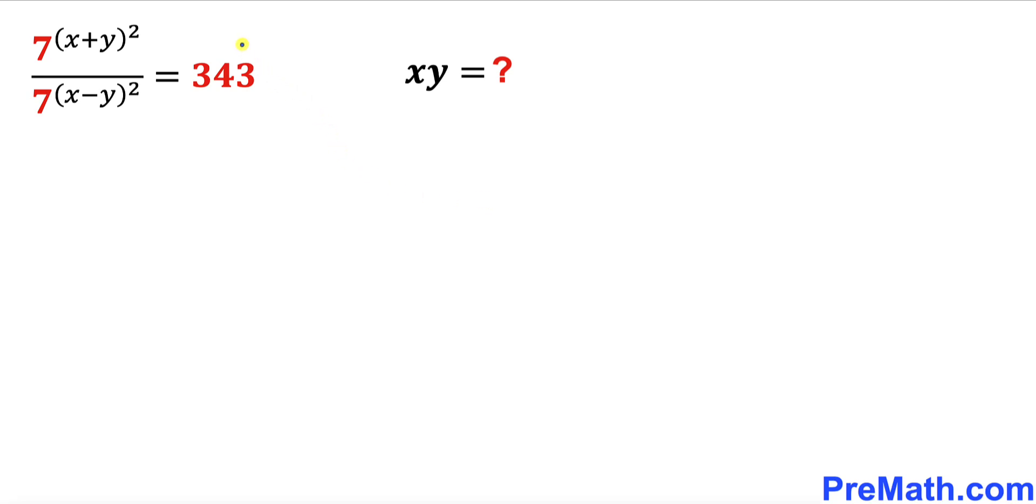Welcome to PreMath. In this video we have got this exponential equation 7^(x+y)² divided by 7^(x-y)² equals 343, and now we are going to find the value of x times y.